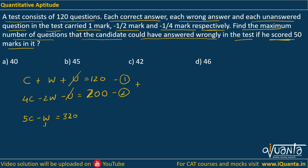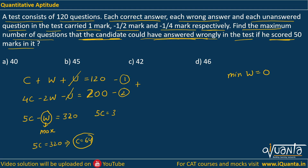Now we need to maximize the value of W, since we have to find the maximum number of questions answered wrongly. The minimum value W can take is 0. Putting W = 0 gives 5C = 320, so C = 64. If we try W = 1, we get 5C = 321, and C becomes a decimal, which is not possible since the number of correct answers must be a positive integer. So W cannot be 1.